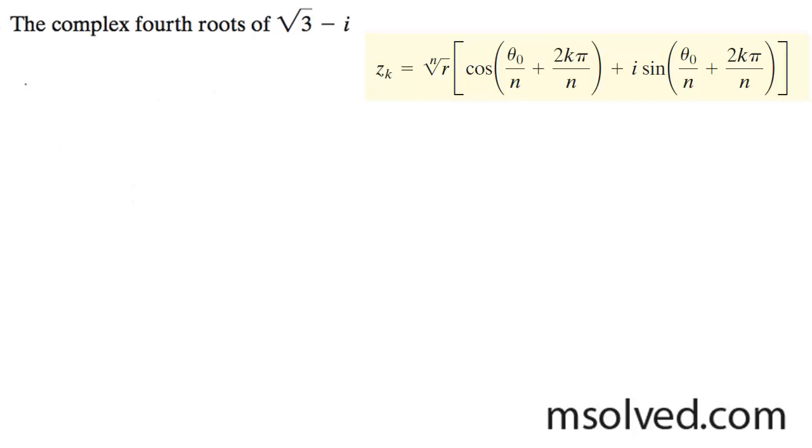So what's going to happen here is we need to find r first. r is going to be equal to the square root of root 3 squared plus, now it's i, but it's just going to be 1. It's going to be 2.